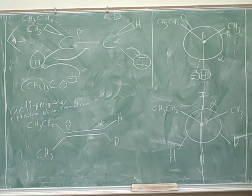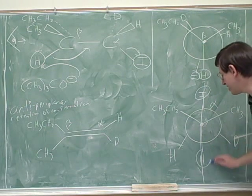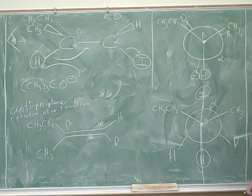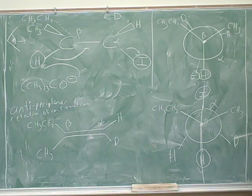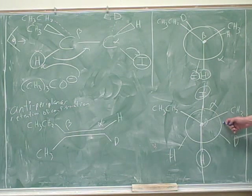All right, and then if necessary, rotate the Newman projection so that the leaving group and the beta hydrogen are anti-periplanar to each other. That basically just means anti. Rotate the hydrogen and the leading group until they're anti to each other. That's what we did in this picture.